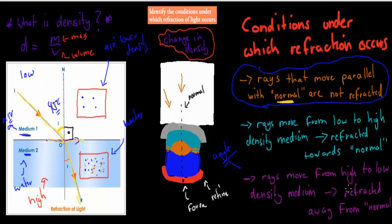If rays travel from high to low density mediums — for example, from water to air — then it's going to be refracting away from the normal. So the ray starts at an angle, hits the surface where refraction happens, but it's going to bend away from normal. If it were going towards normal, it would have bent closer; but because it's going from high to low density, it bends away from the normal.